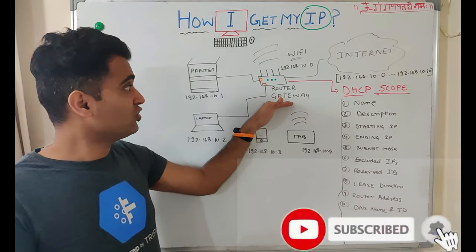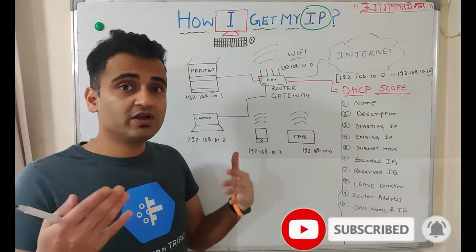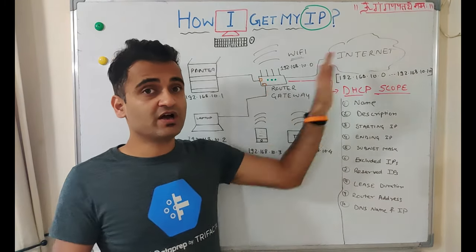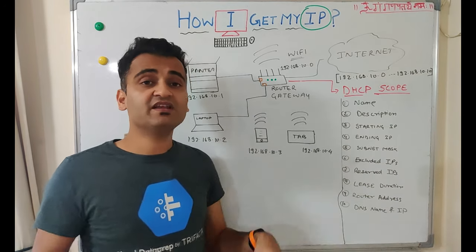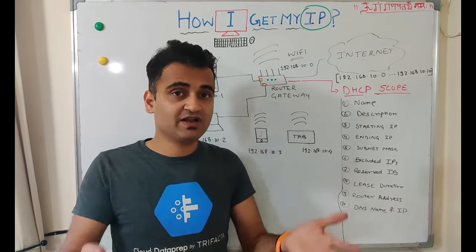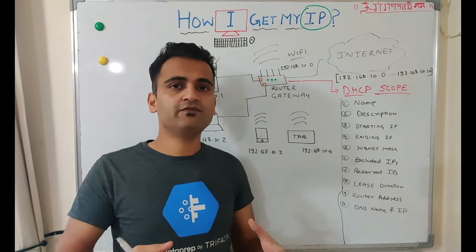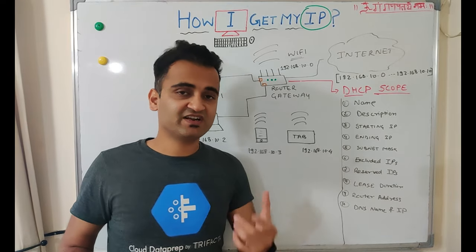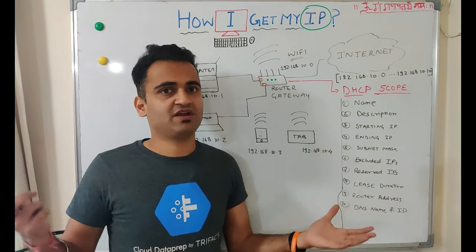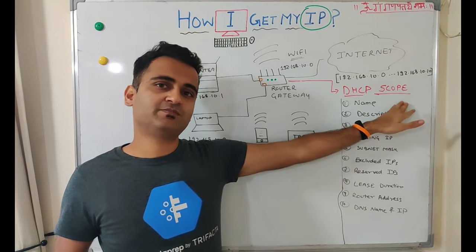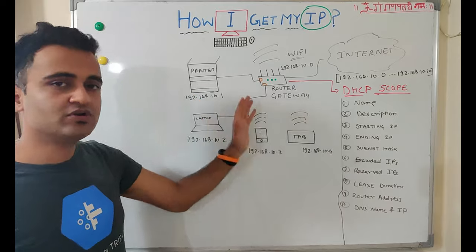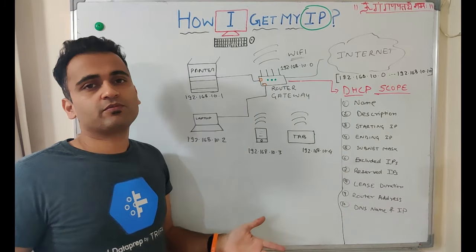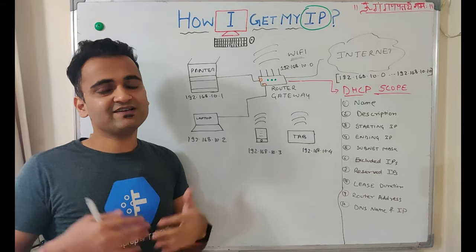The router address must also be specified in the scope because the router gateway tells the device which subnet it belongs to and allows it to eventually connect to the internet. Additionally, the DNS — Domain Name Service — name and IP are included so that you can browse websites by name rather than remembering their IP addresses. All this information forms the DHCP scope, and whenever a new device joins the network, it receives all these details to function correctly.